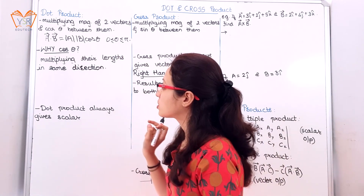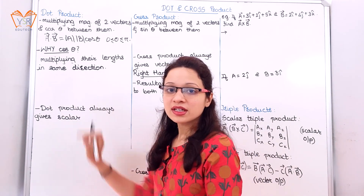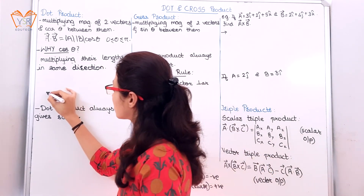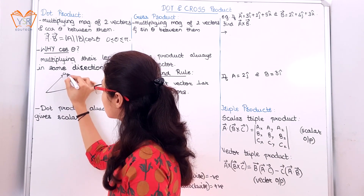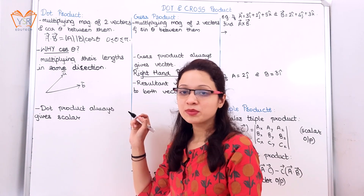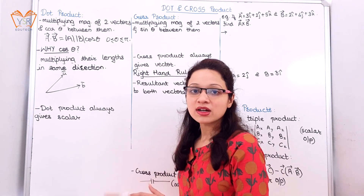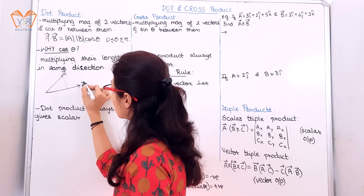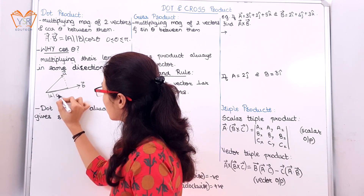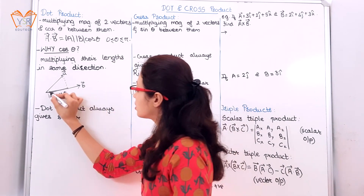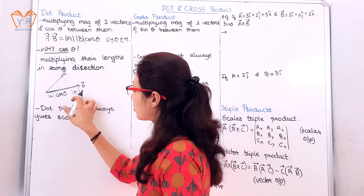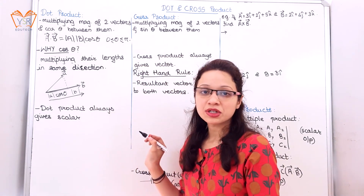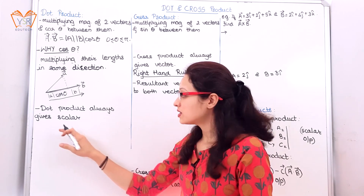Now why specifically cosθ? If the vectors are in the same direction, only then we consider the magnitudes — multiplying magnitudes is nothing but multiplying their lengths. If you project vector a onto vector b, this part will be the magnitude of a times cosθ, and this whole part is the magnitude of B. So we get the product of two magnitudes times cosθ. This result gives us a scalar quantity, so dot product always gives a scalar.